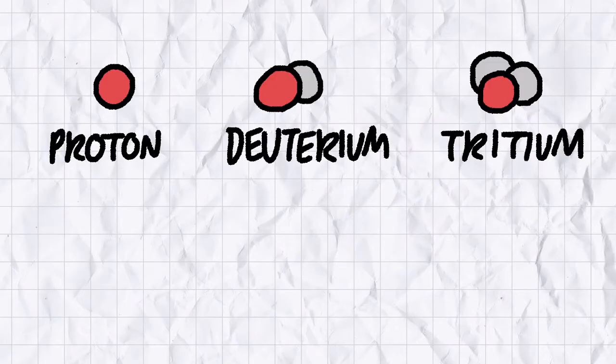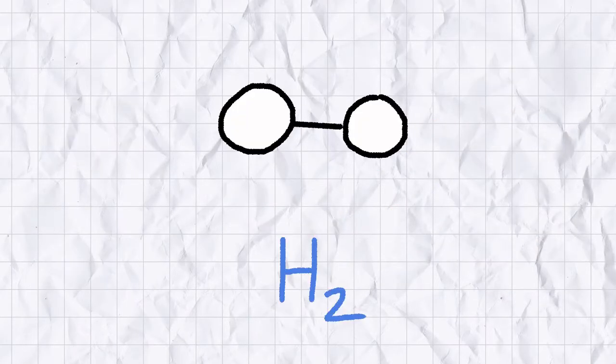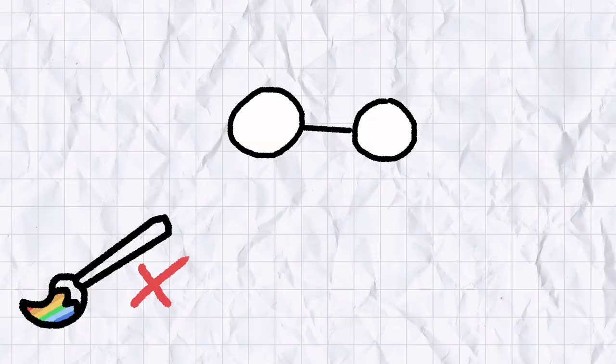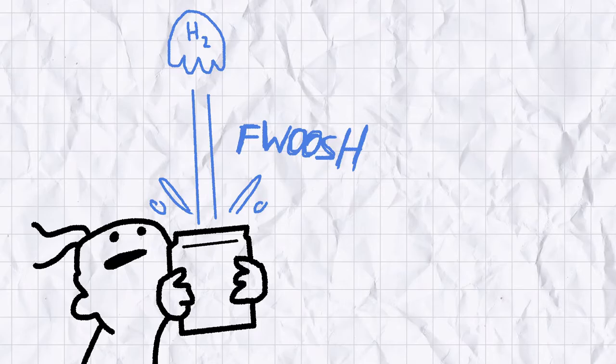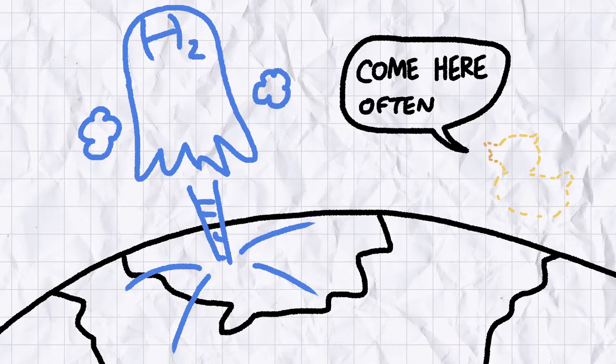Now hydrogen atoms are two a penny in the universe, but hydrogen the compound is actually pretty rare on Earth. Hydrogen gas is colourless, odourless, and so light that if you let it out of its container, it'll float merrily away into the upper atmosphere like an invisible gaseous rubber ducky.